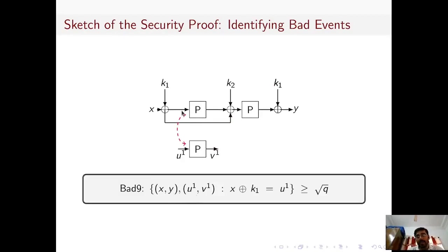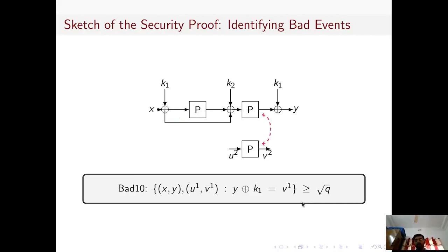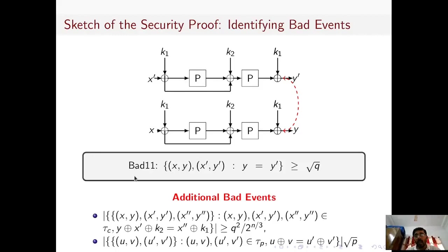Bad event 9 says that the number of construction and primitive queries such that the input to the first permutation call collides with the input of some primitive query should not be too large — specifically, if the cardinality of this set is at least √q, then it is bad. Bad event 10 is the mirror image of bad event 9, imposing a restriction on the output set. Bad event 11 says the number of colliding queries where y = y' should not be too large; if it is greater than √q, the event is considered bad. These additional bad events are required to lower-bound the real interpolation probability for good transcripts.